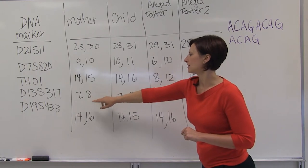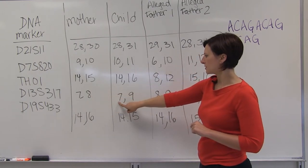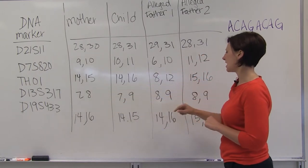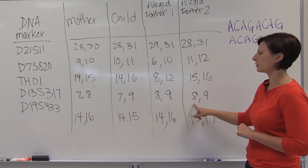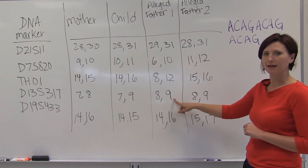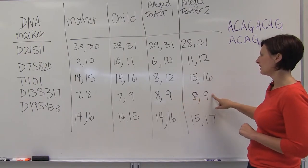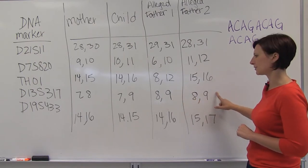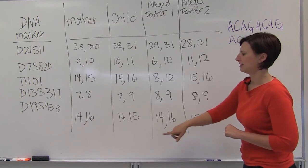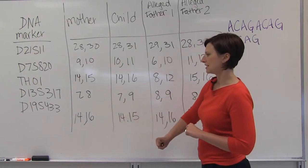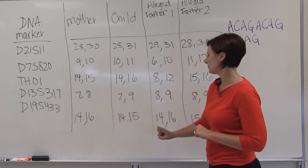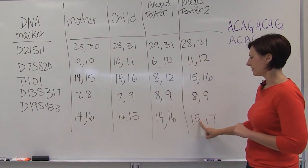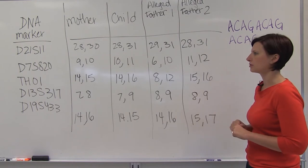In the fourth locus, we see the 7 coming from the child's mother. And the 9 could have come from either of these two alleged fathers. But since we've already ruled out alleged father 1, we know that we're just still in the running with alleged father 2. 14, 16 for the fifth locus. 14, 15 for the child. So 14 had to have come from the mother, and 15 could have come from alleged father 2.